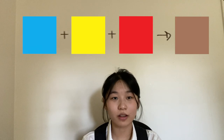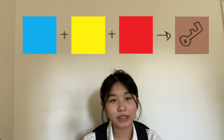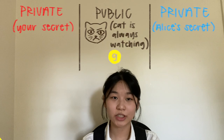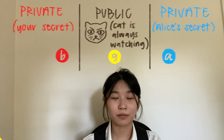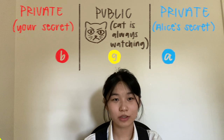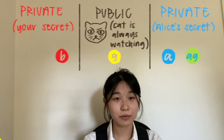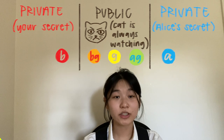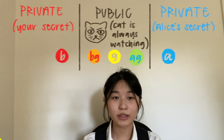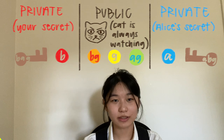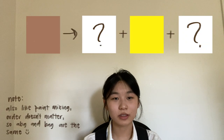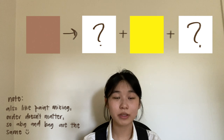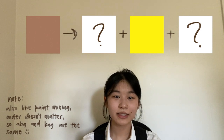Think of it as color mixing — only the exact combination of colors will be able to encode and decode the message. You and Alice decide on g, a shared color, and then you individually choose your own colors a and b. Alice mixes a with g creating ag, and you mix b with g creating bg. You then share ag and bg across the public space. Individually, you each create abg and bag — this will be your secret key.